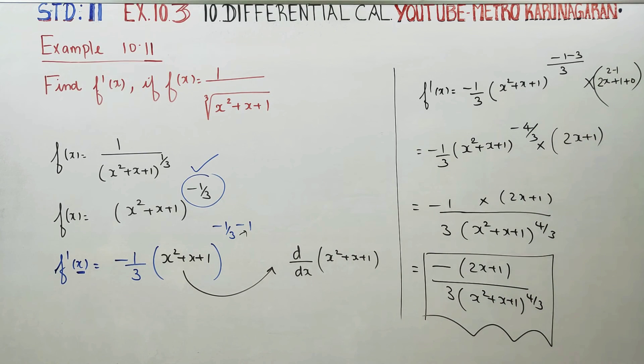This is the way of expressing the result. This is the chain rule. If you want to see the power minus 4 by 3, you can see the power minus 4 by 3. Thank you.